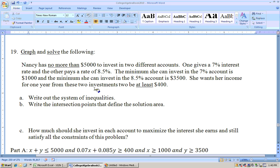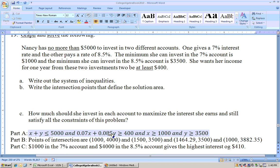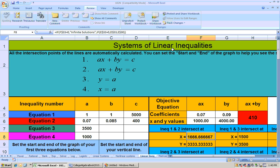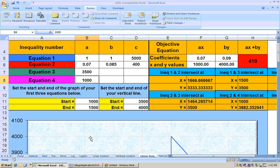And she wants her income for one year from these two investments to be at least $400. So her interest rate times her different amounts, 0.07x + 0.085y, has to be ≥ 400. So these are my constraints right here. And so let's go ahead and take a look at this. And I'd use the Systems of Linear Inequalities or the Linear Inequality Sheet. My one equation was x + y ≤ 5000. My second one was 0.07x + 0.085y ≥ 400. And my y value, the amount that I put in my 8.5% account, has to be at least 3,500. And the x amount has to be at least $1,000 in the 7% account.